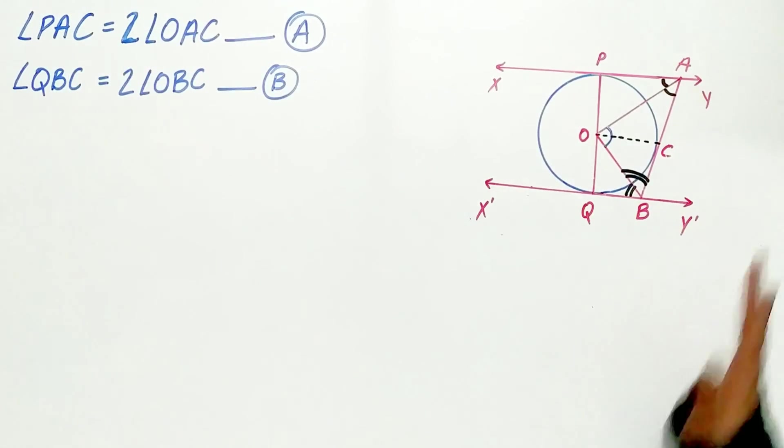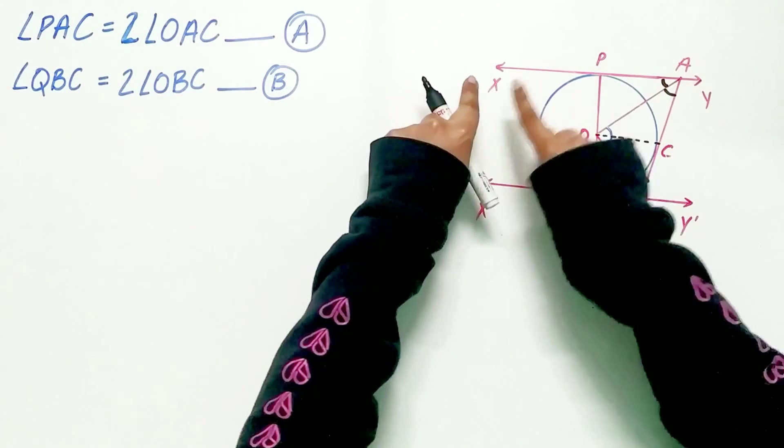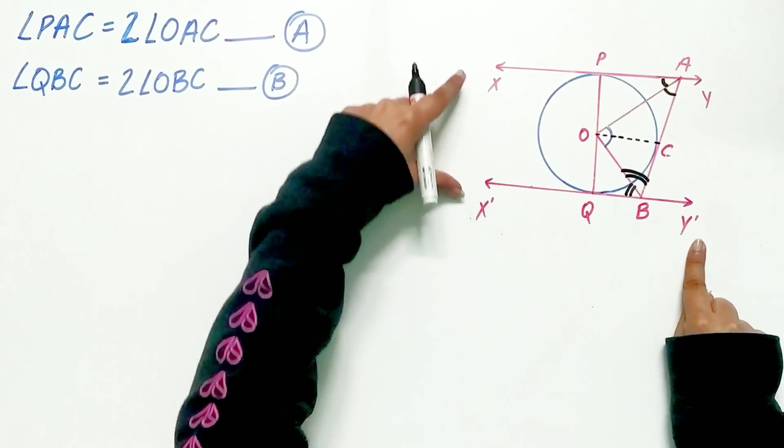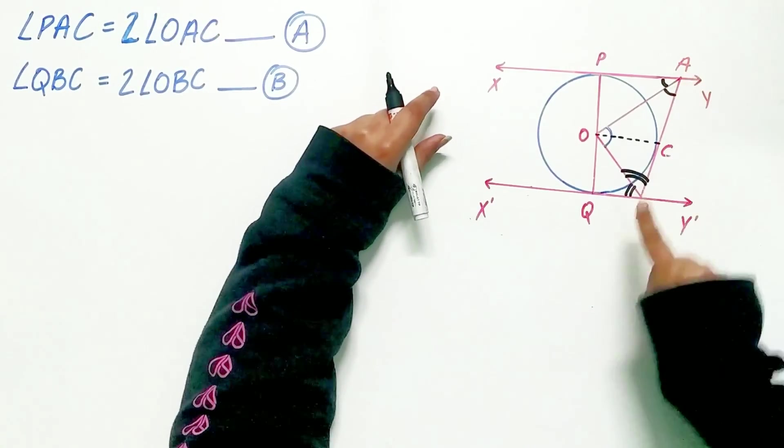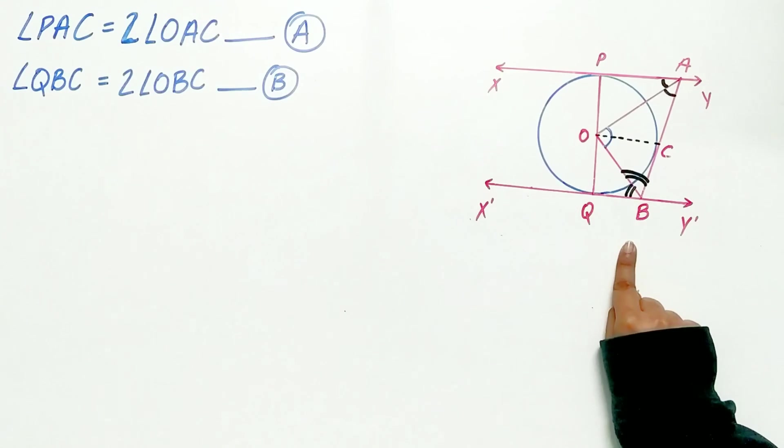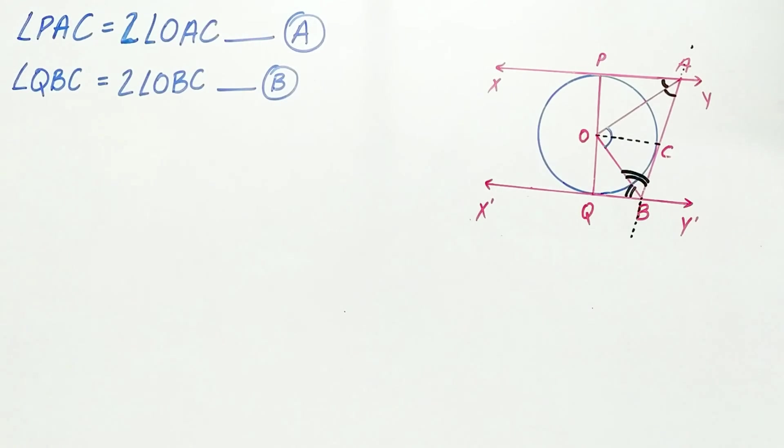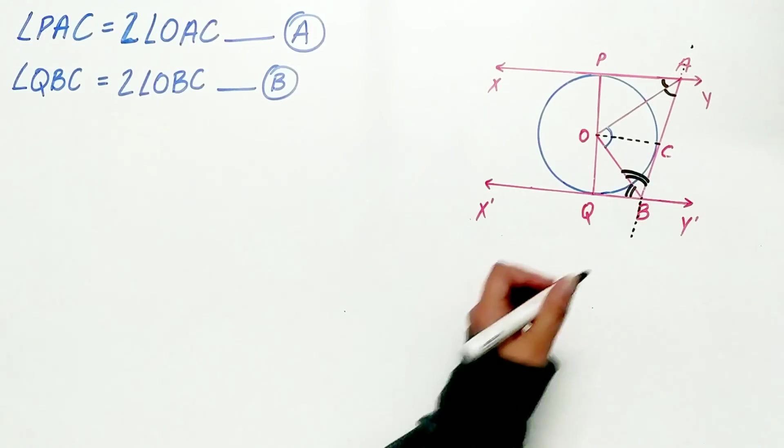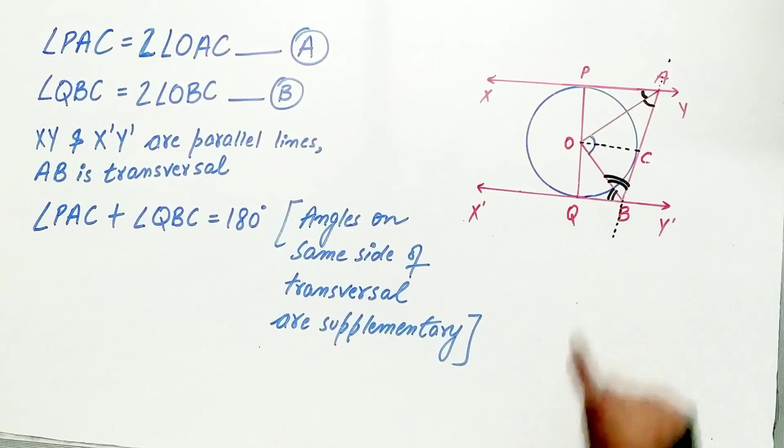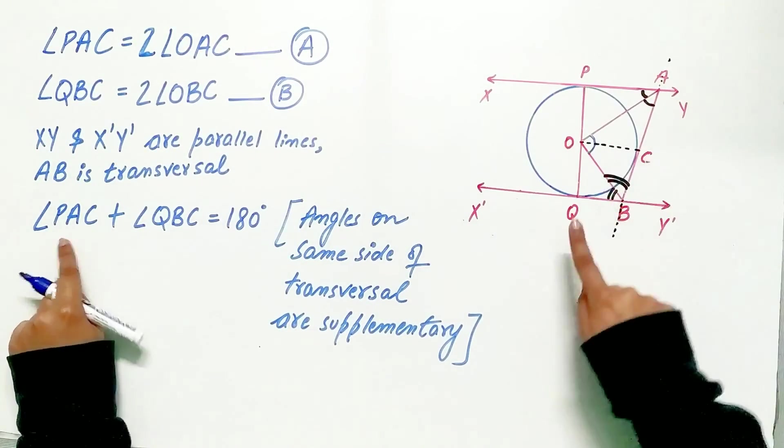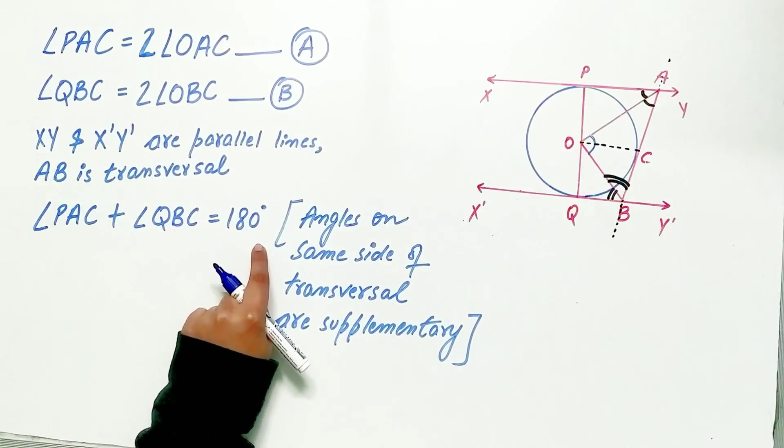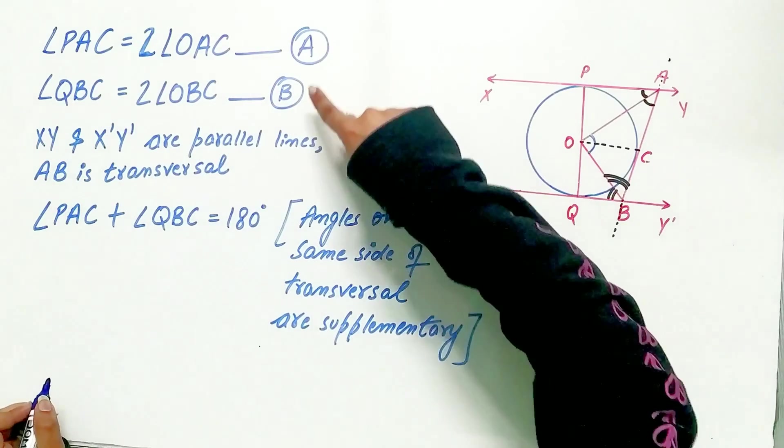Now look carefully. We are halfway away from the solution. XY and X'Y' are two parallel lines. AB is a transversal. Remember, the angles on the same side of transversal are supplementary. Hence, angle PAC plus angle QBC is equal to 180 degrees.